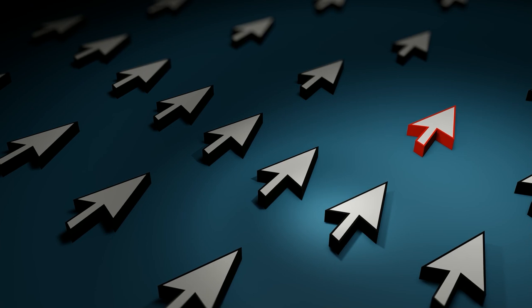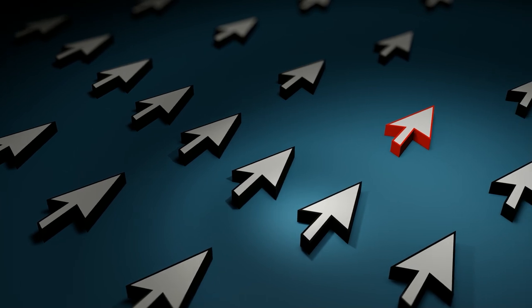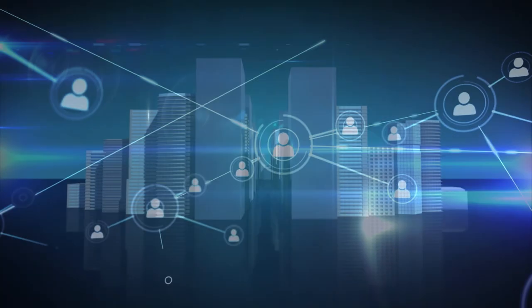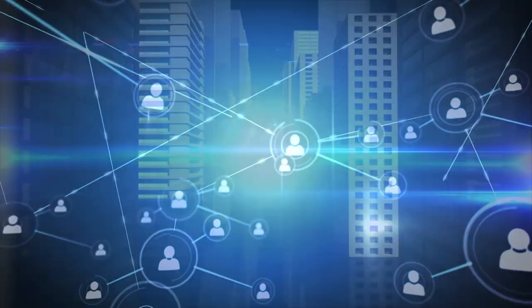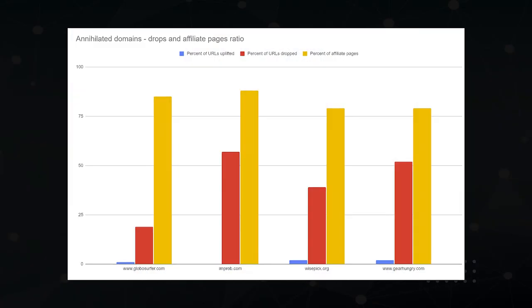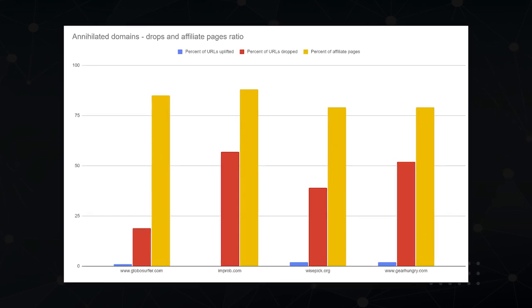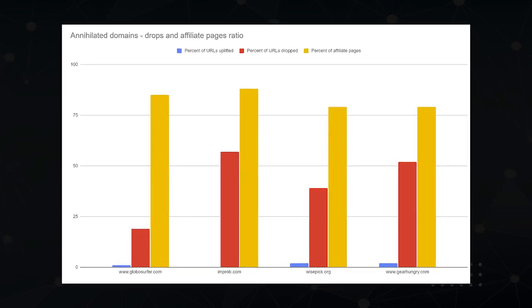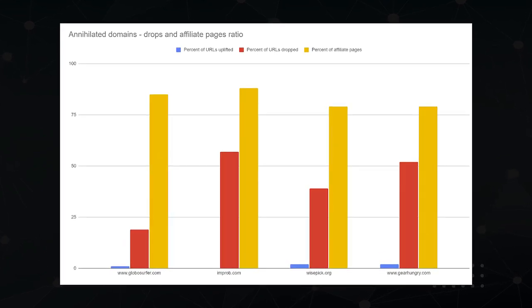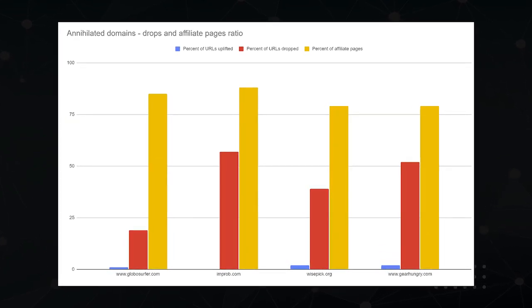Sure, there are outliers, just as there are many facets to any update. But for the most part, there's decent correlation. We then went back to GearHungry and all those other mega sites that got annihilated — each of them had over 75% commercial content.